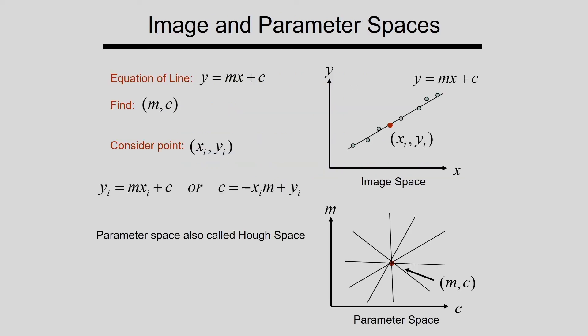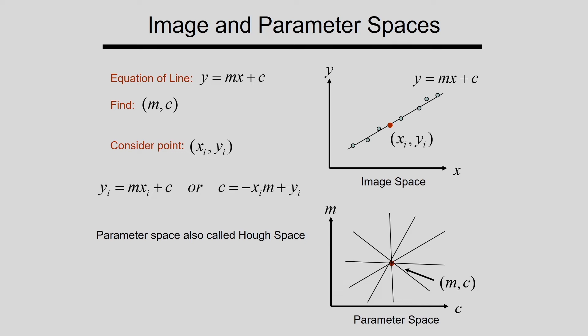I am considering one line whose equation is y = mx + c. The parameters of the line are the gradient m and the intercept c. I have shown two spaces: one is the image space (x, y) and the other is the parametric space (m, c).